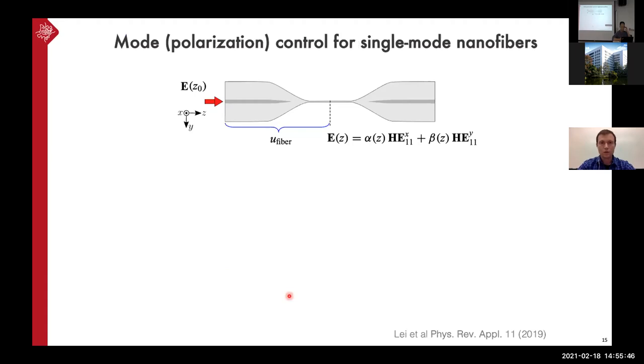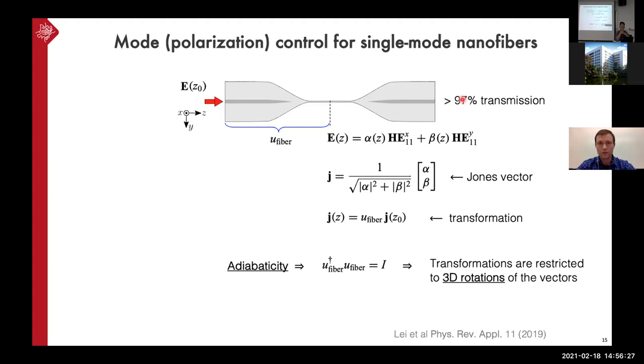And how we do that, we consider this electric field at the waist of the nanofiber. And we express it as a complex superposition of two orthogonal modes and fundamental modes. And this complex coefficients are linked by, they are making the Jones vector describing the polarization. And the Jones vectors at the different places in the system are linked by this transformation Jones matrix, which is two by two complex element matrix. And recalling that this fiber is adiabatic, meaning that it transmits the energy with very low losses,